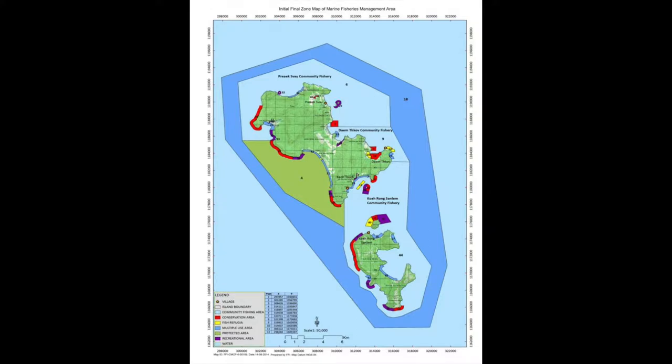Until the Marine Fisheries Management Area was declared, the community fisheries were the only form of local management. Within their management structures you can have no-take zones, which are called conservation areas in this context — shown in red — and fisheries refugia, which are the yellow.